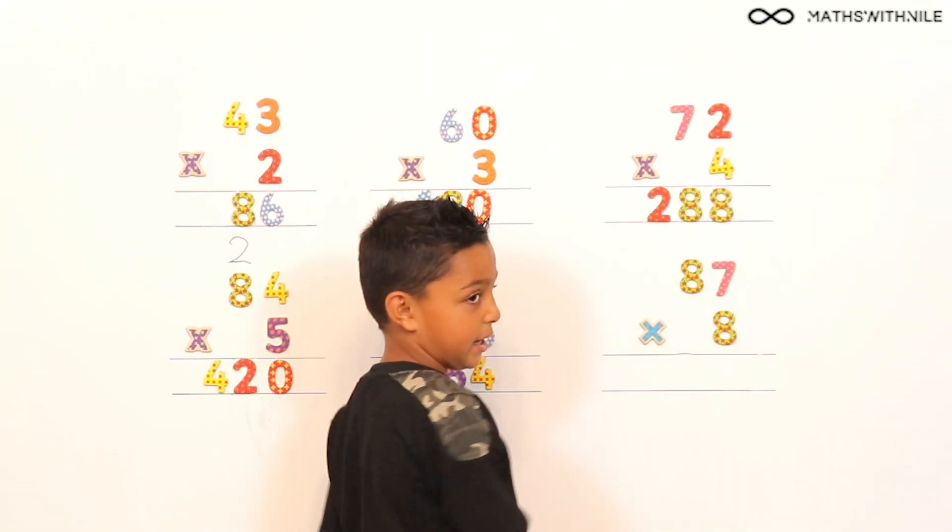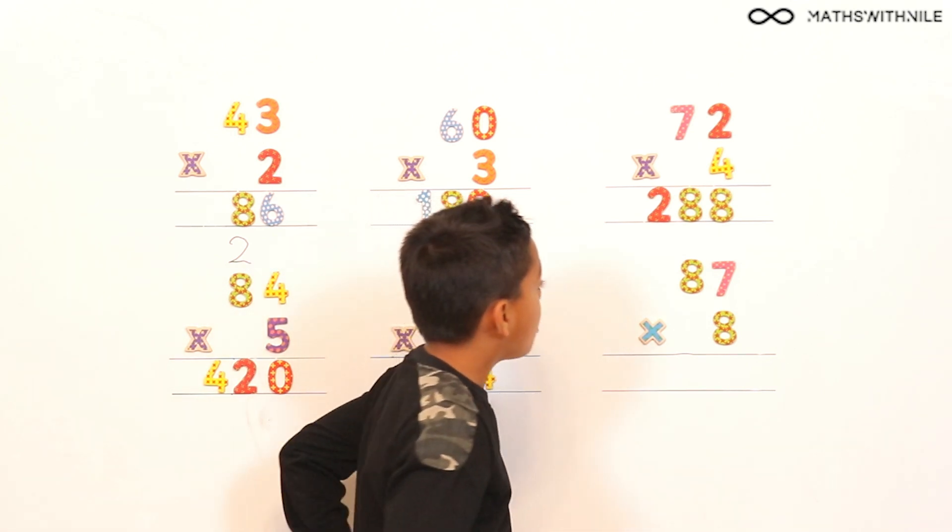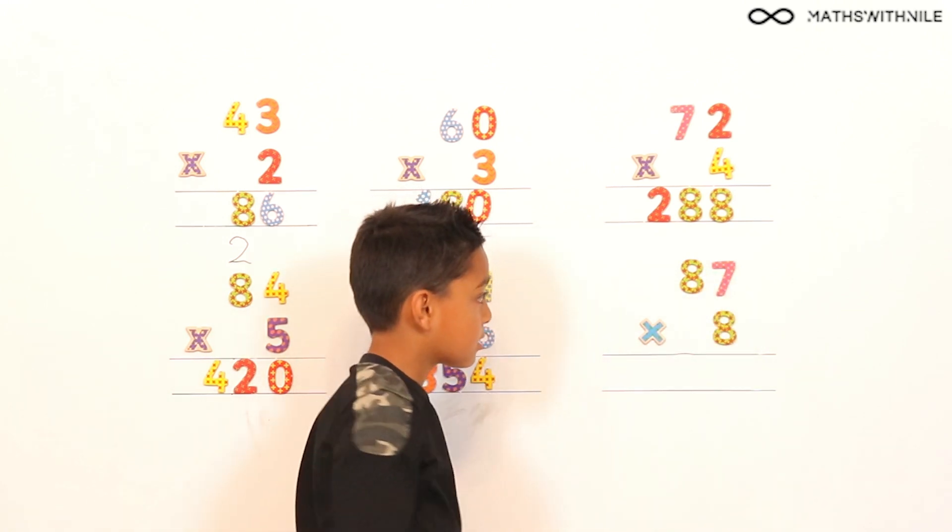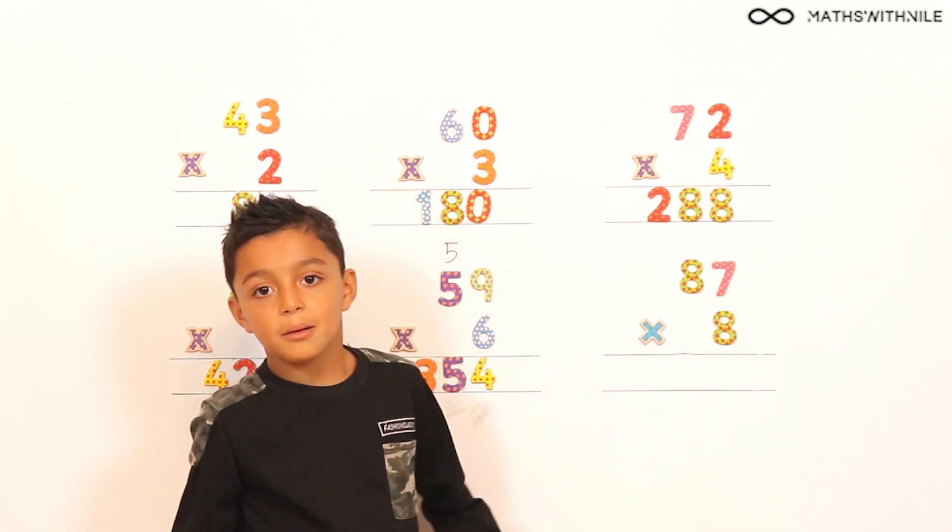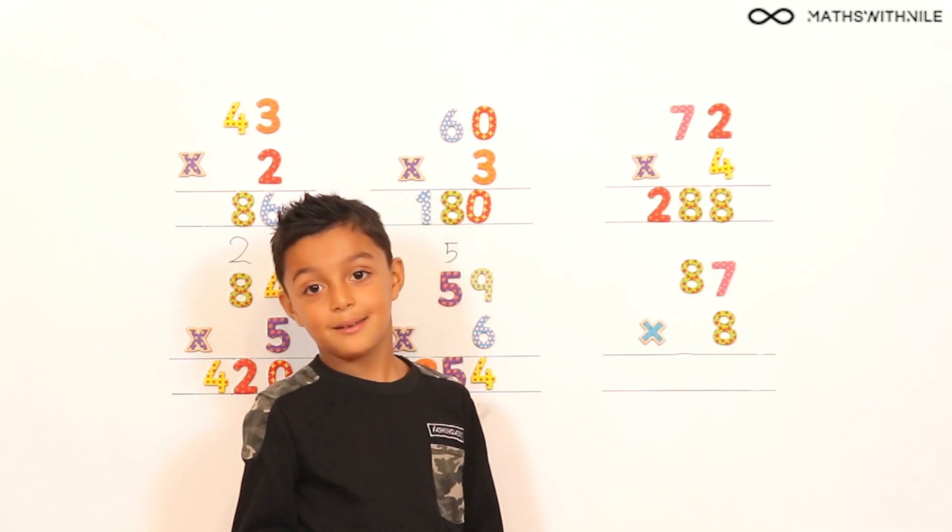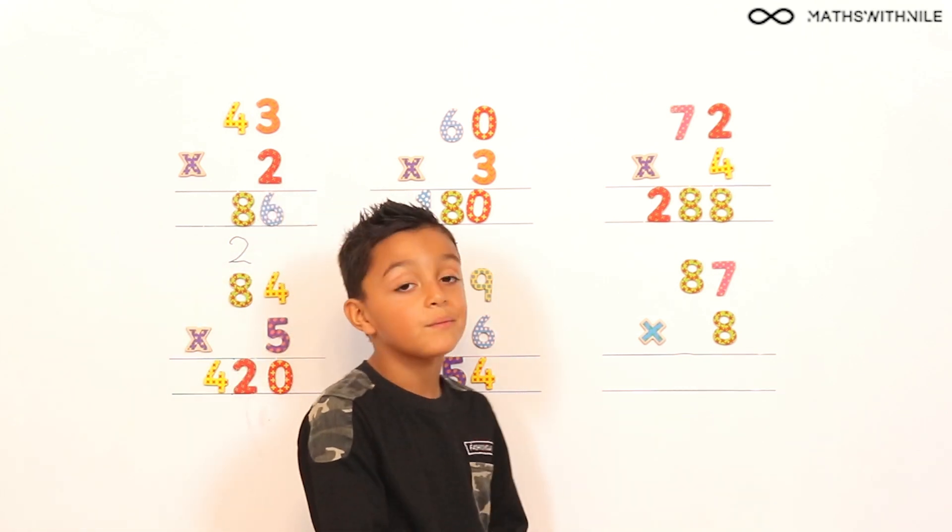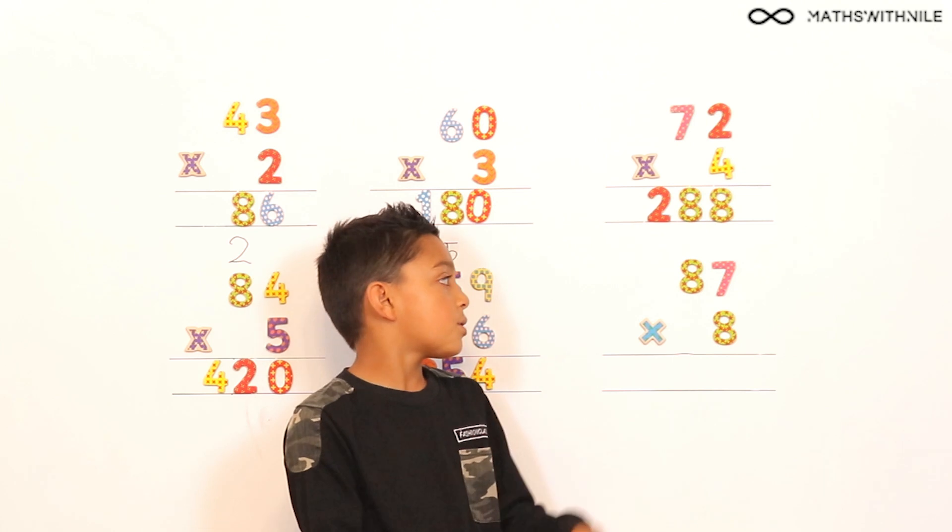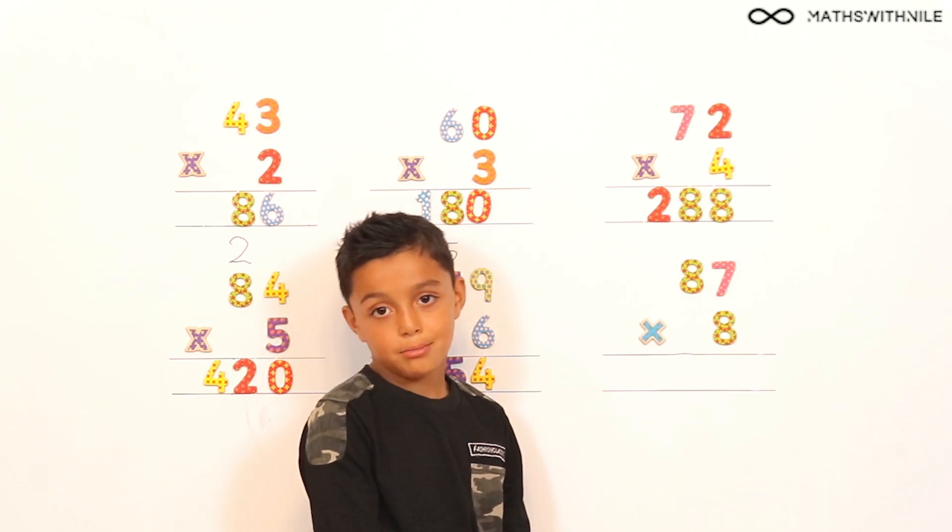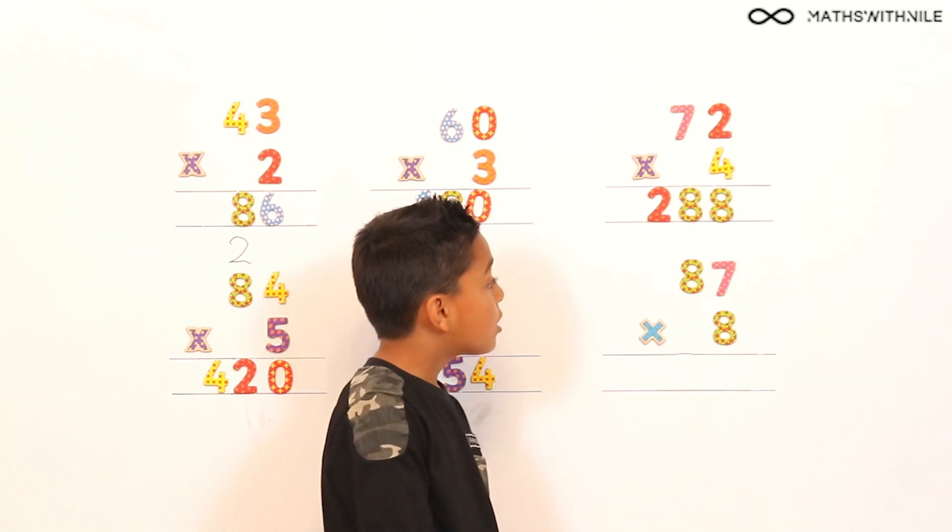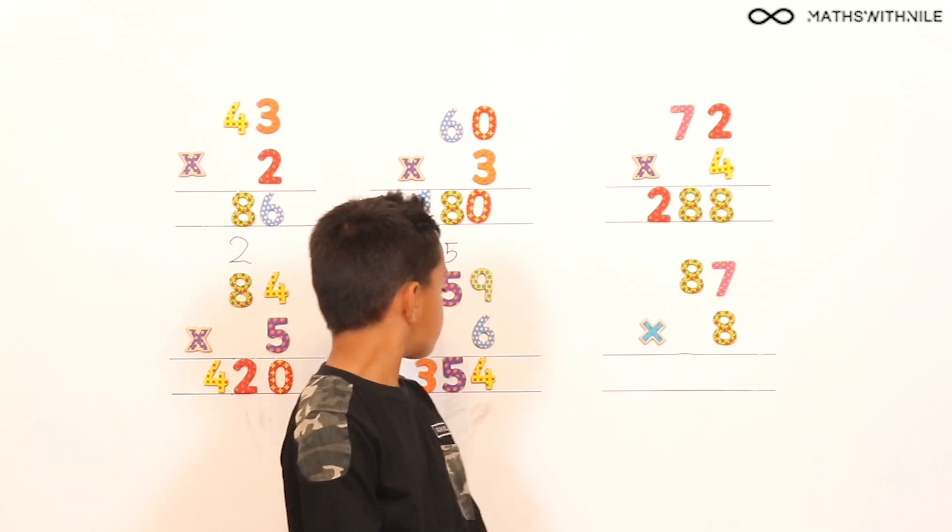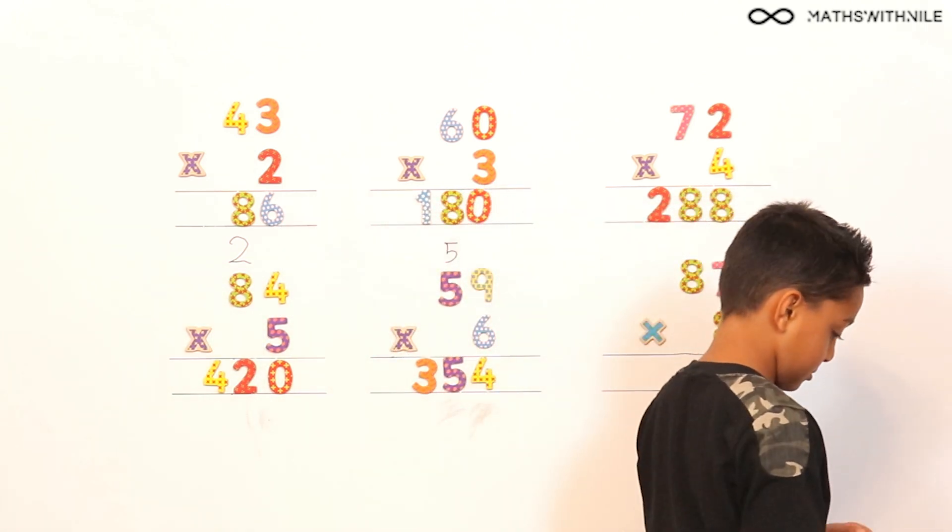87 times 8. Okay. And what are you going to start with? I'm going to start with the units. Which is? 7 times 8. Good. So how are you, you don't know 7 times 8 straight away. No, but I do know what 7 times 7 is. Do you? What is 7 times 7? 49. Very good. That is correct. So how is 7 times 7 going to help you to work out that question? I'm going to add on a 7. Okay. Because you're doing 8 lots of 7. Yes. Instead of 7 lots of 7. So what will the answer be? So, 49 and 7 equals 56. Excellent. What are you doing? So I have to write, wait, two, three.